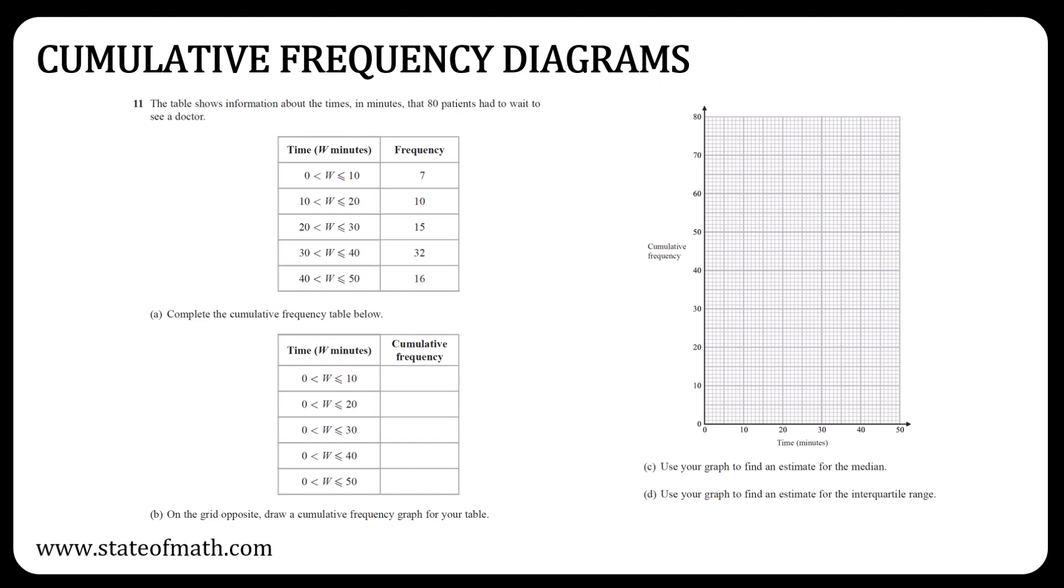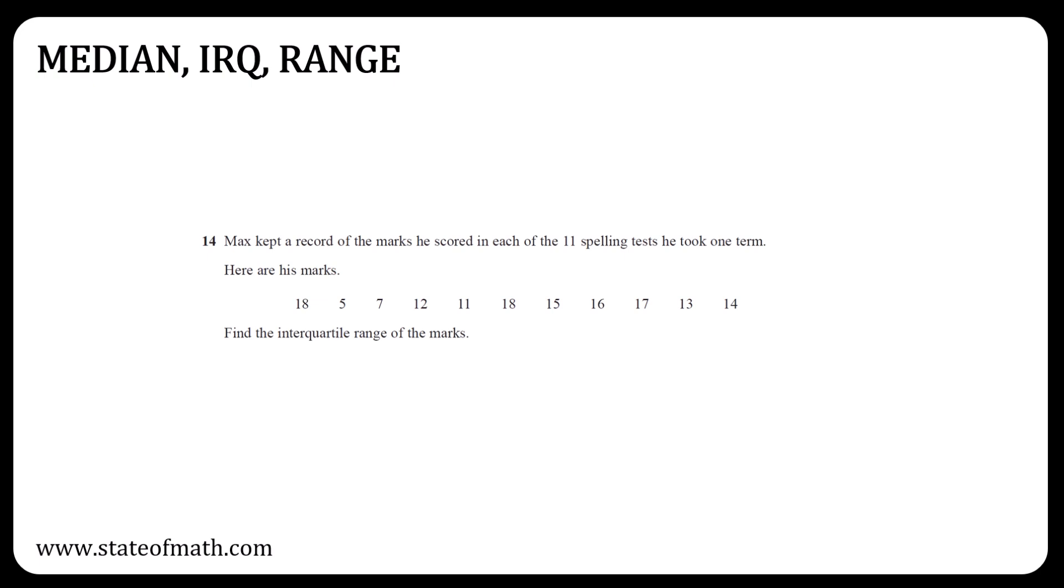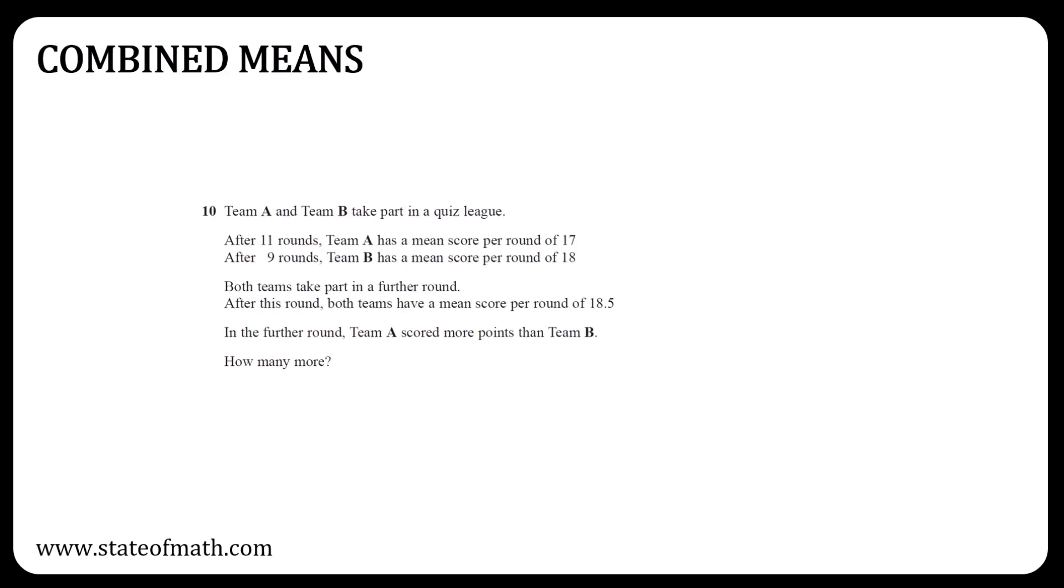Cumulative frequency diagrams is a must-revise topic. Finding the median and the interquartile range could be asked in this question or on a question on their own given a list of numbers. Even though the first question of Paper 1H involved a frequency table and finding the mean, a combined means question is a strong candidate for Paper 2H.